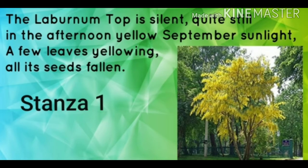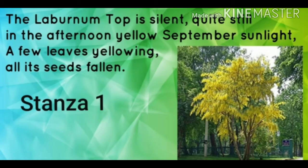In the opening lines, the poet gives a description of the laburnum tree. The laburnum top is silent — here 'laburnum top' refers to the top part of the tree. The tree is standing quite still in the afternoon, yellow September sunlight. September indicates autumn season, which welcomes winter. Autumn is the time when the leaves of trees turn yellow. So the time is afternoon, a few leaves have turned yellow, and all its seeds have fallen. These lines depict the stillness, quietness and silence around the laburnum tree because there is no movement or disturbance.